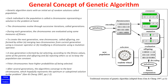A new generation is formed by (a) selecting, according to the fitness values, some of the parents and offspring, and (b) rejecting others, so as to keep the population size constant. Fitter chromosomes have higher probabilities of being selected. After several generations, the algorithm converges to the best chromosome, which hopefully represents the optimum or suboptimal solution to the problem.